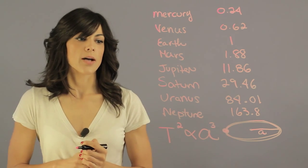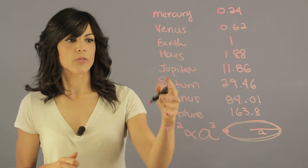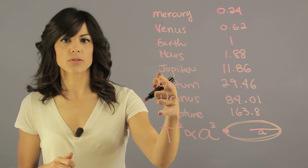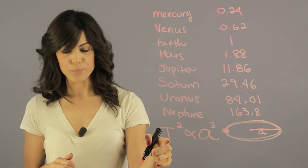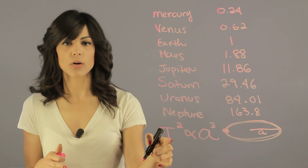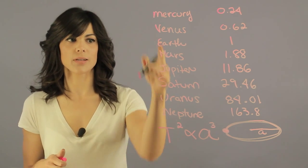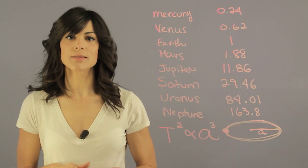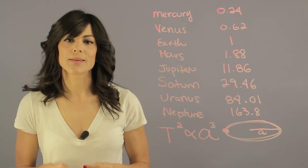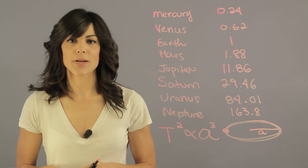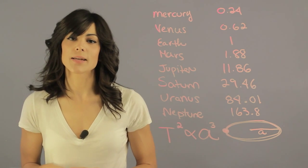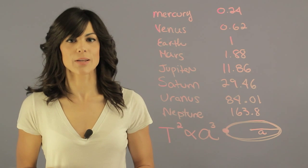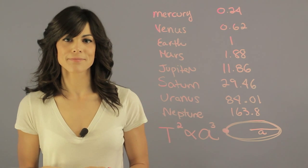So as you can tell, the outer planets are going to have longer orbital periods than the inner planets. My name is Aileen Perez and I'm an astrophysicist, and this is: do outer planets have smaller orbital periods than inner planets?